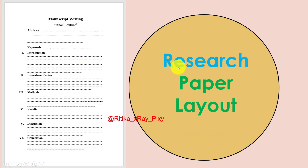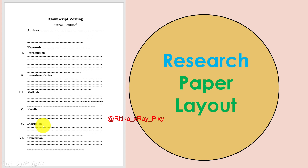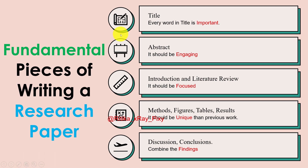The basic research paper layout includes: title, author's name, abstract, keywords, introduction, and conclusion. For a complete research paper, the sections are: title, author name, abstract, keywords, introduction, literature review, method, results and discussion, conclusion, and references at the end.